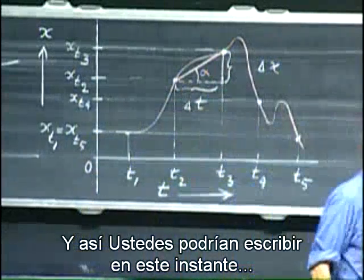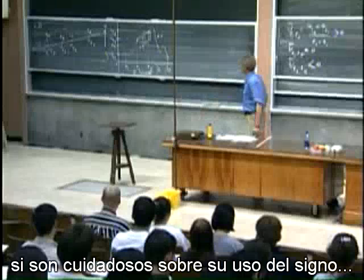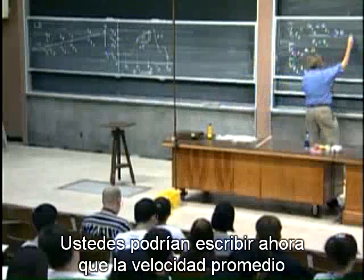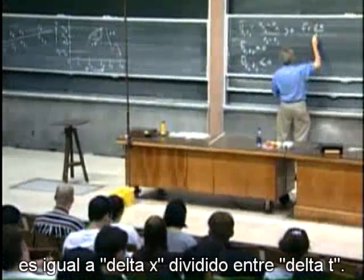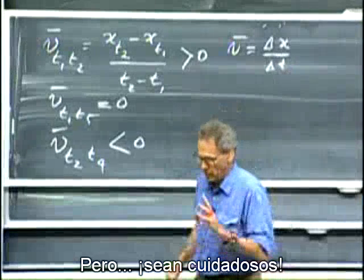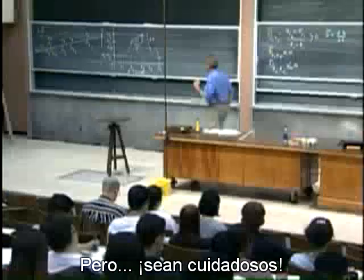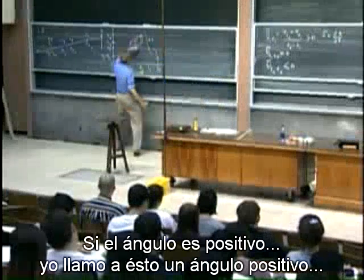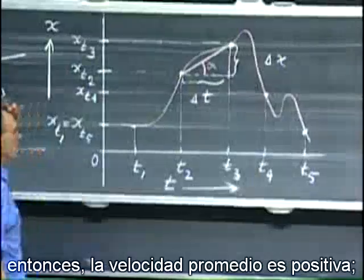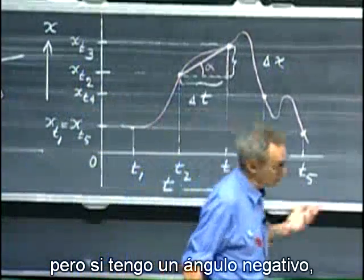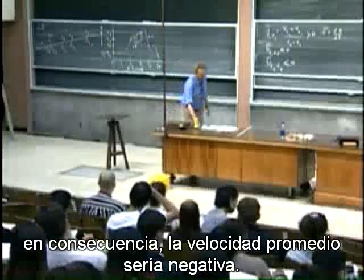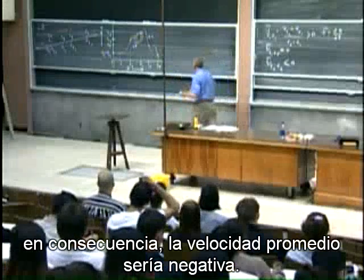And so you could write now, if you're careful about your sine convention, you could write down now that the average velocity equals delta x divided by delta t. But be careful, if the angle is positive, I call this a positive angle, then the average velocity is positive, but if I have a negative angle, then the average velocity would be negative.